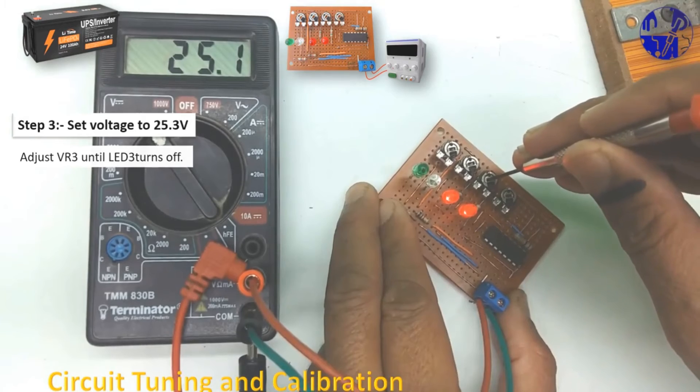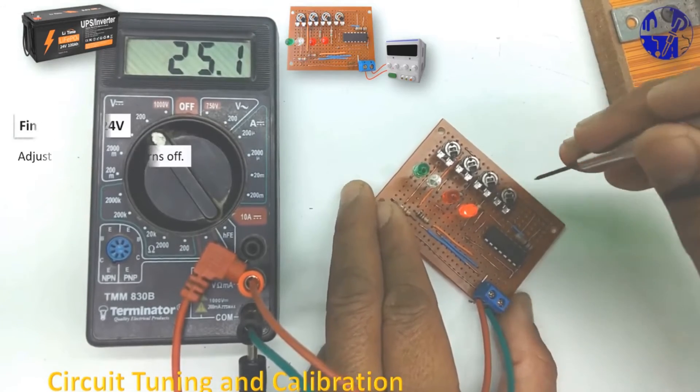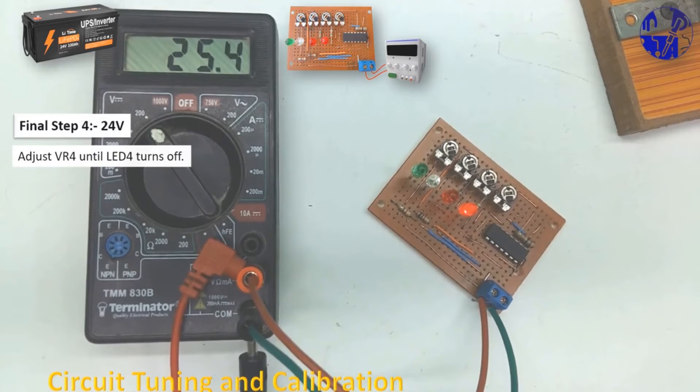In the final calibration step, set the voltage to 24V. When the battery voltage drops below 24V, LED4 will turn off.